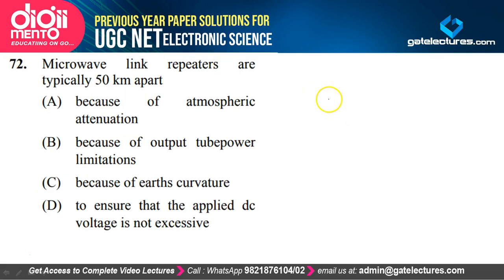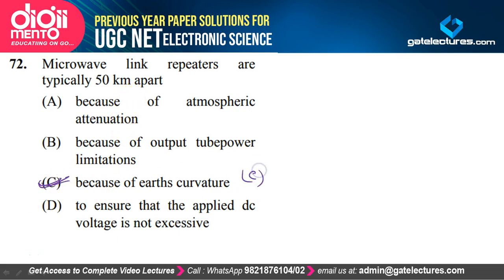Microwave link repeaters are typically 50 km apart because the Earth's curvature is considered almost a straight line over 50 km. After every 50 km, the curvature of the Earth slightly bends and is no longer a straight line. That is why repeaters are kept 50 km apart — option C is correct.